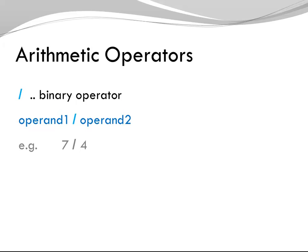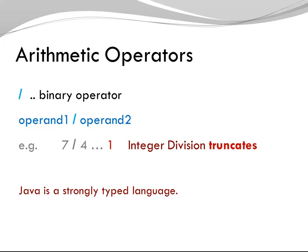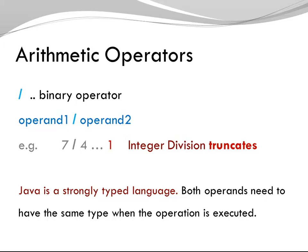Divided, the Java symbol for division is a forward slash. 7 divided by 4 is 1. At this point, you might think she forgot the .75, but I really mean 1, like in integer division. Integer division truncates. Java is a strongly typed language. Both operands need to have the same type when the operation is executed, and the result is of that same type.